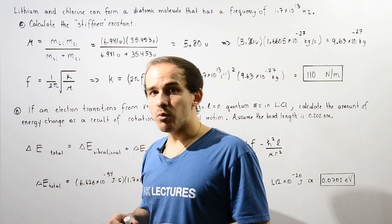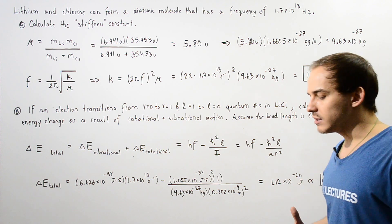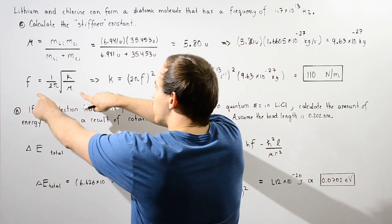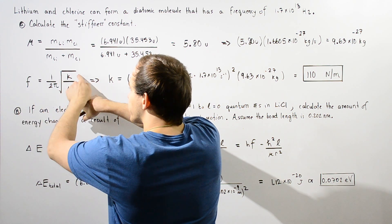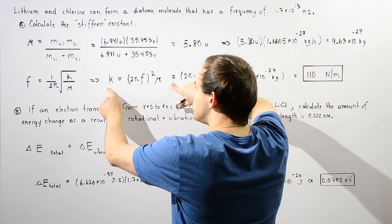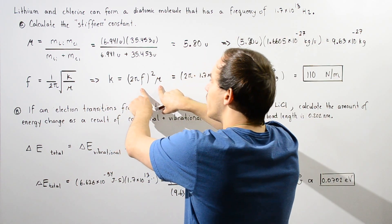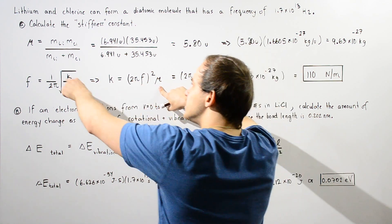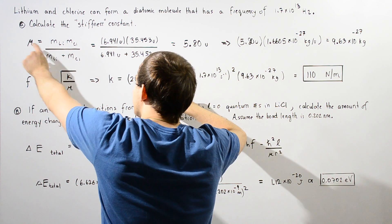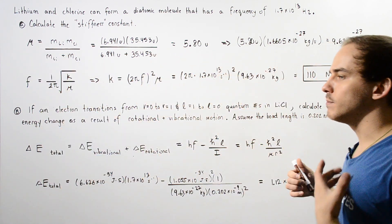In part A we want to calculate the stiffness constant of our molecule, so we want to use this equation. If we solve this equation for K, the stiffness constant, we get this equation. Notice although we do know what the frequency is, we don't know what our mu is. The mu is the reduced mass which can be obtained by using this equation. So first we must calculate what our mu is.